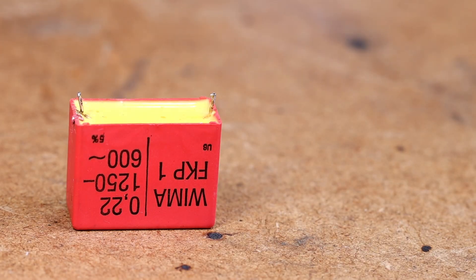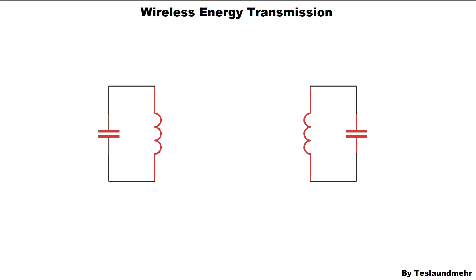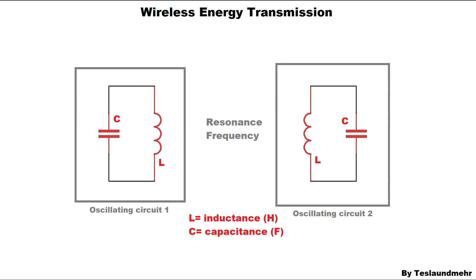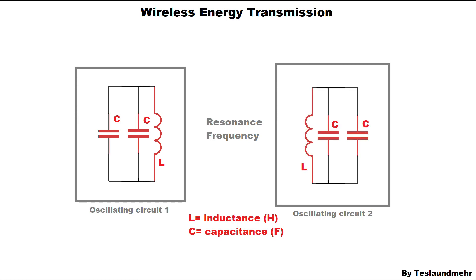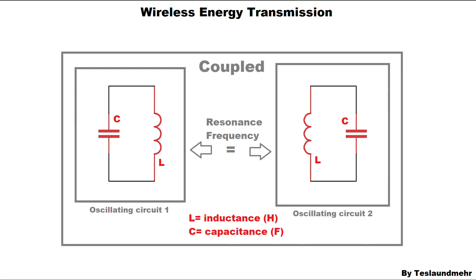To improve the wireless power transmission significantly we actually need only two components: two capacitors. These are connected in parallel to the coil. Now we don't just have two coils — we have two oscillating circuits. Each oscillating circuit has its own frequency, the resonant frequency. This specific frequency changes with the value of the coil and the capacitance of the capacitor. If we increase the capacitance of the capacitor, the resonant frequency decreases. This is logical because the capacitor needs more time to recharge. The technical term for this is resonant inductive coupling.